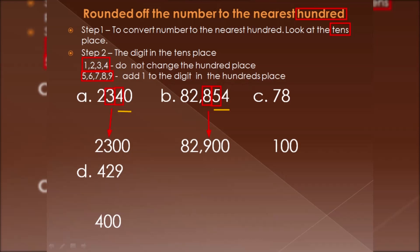Next is 78. This is only a two-digit number, so the hundreds place is zero. Look at the tens place — it is 7, which is greater than 5. We add one to the hundreds place, so the one shifts to the hundreds place. The tens and ones places become zero. So 78 rounded to the nearest hundred is 100.